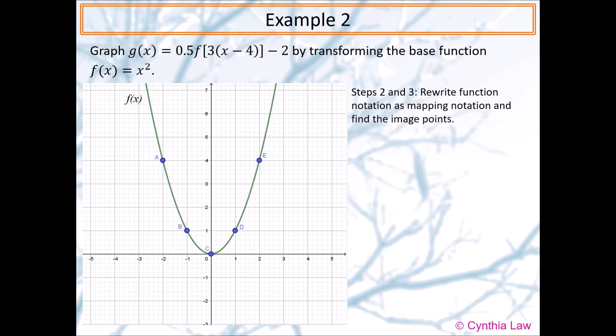Steps 2 and 3: We write function notation as mapping notation and find the image points. From the function notation we can see that a is 0.5 or a half, 1 over k is 3 so k is 1/3, d is 4, and c is negative 2.